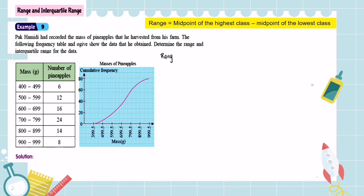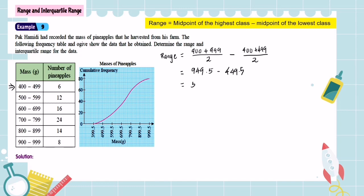Now we calculate the range. The midpoint of the highest class minus the midpoint of the lowest class — the first row — which is 400 plus 499 divided by 2. This equals 949.5 minus 449.5, which equals 500 grams.